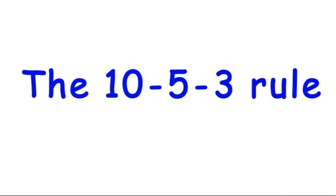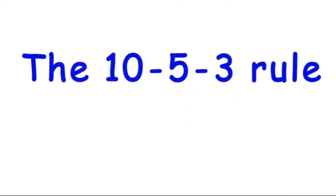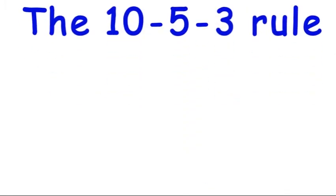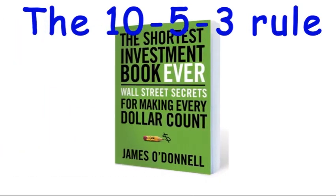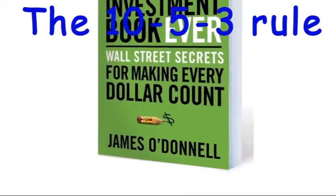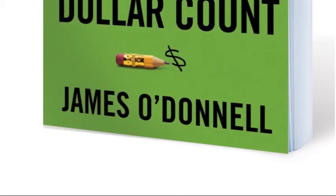The 10-5-3 rule. This rule came from the book called The Shortest Investment Book Ever: Wall Street Secrets for Making Every Dollar Count by James O'Donnell.